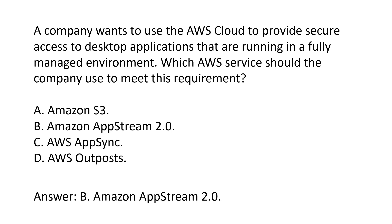The correct answer is B. Amazon AppStream 2.0. Amazon AppStream 2.0 is an AWS service that provides secure access to desktop applications running in a fully managed environment. It allows users to securely access applications from any device, including laptops, tablets, and smartphones.